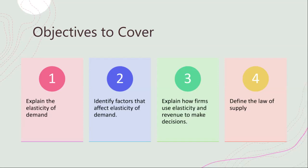Technological advancements or innovation can increase supply by making production more efficient. Government regulation — meaning government interference, moderation, or intervention — can also impact supply. For instance, environmental regulations might restrict the production of certain goods. Think about governments limiting the carbon footprints of their countries, which affects the oil and gas industry, and in effect affects other industries as well.